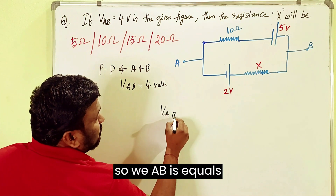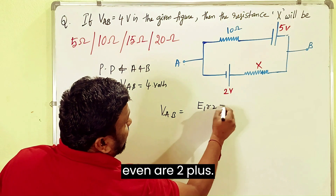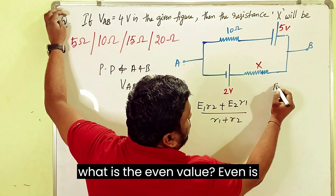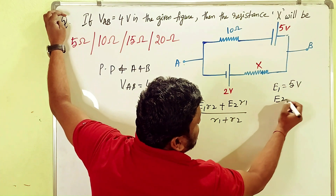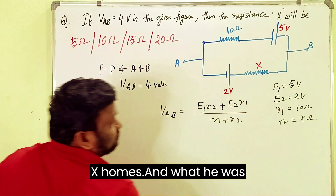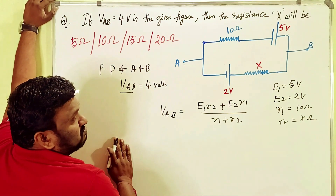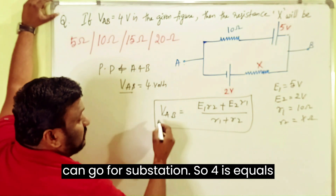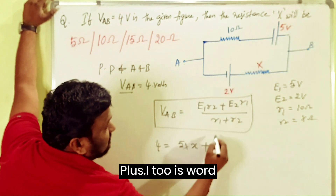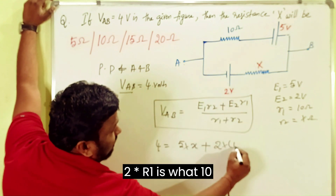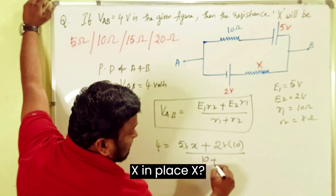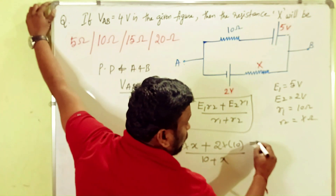For that, this is a direct bit, so VAB equals (E1·R2 plus E2·R1) divided by (R1 plus R2). Here E1 is 5 volts, E2 is 2 volts, R1 is 10 ohms, and R2 is X. Substituting: 4 equals (5 times X plus 2 times 10) divided by (10 plus X).